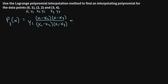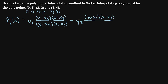Then we add the next term: y2 multiplied by the same pattern. The x value corresponding to y2 is x2, so in the numerator we subtract all x values that are not x2: (x − x1) times (x − x3). In the denominator, we take x2 minus all other x values: (x2 − x1) times (x2 − x3).